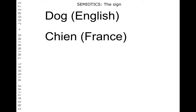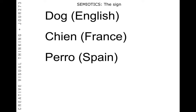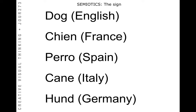This showed that the relationship between the signifier — the word 'dog' — and the thing itself that it signified was completely arbitrary, because in different languages the word 'dog' is spelled differently and pronounced differently.